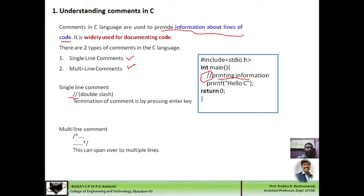Let us look at a multi-line comment. If you want to put a comment for multiple lines, we write a slash-star at the beginning of the first line, and after a few lines, at the end of the last line, we insert star-slash. Whatever lines are between these two symbols will be commented and will not be considered for machine translation. These lines are ignored by the compiler during program execution. The multi-line comment can span over more than two lines.